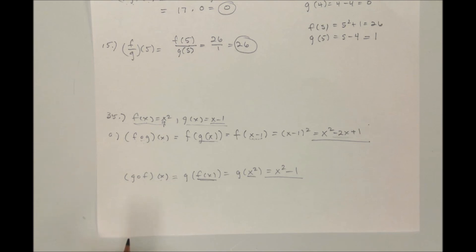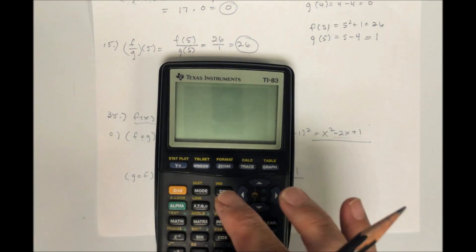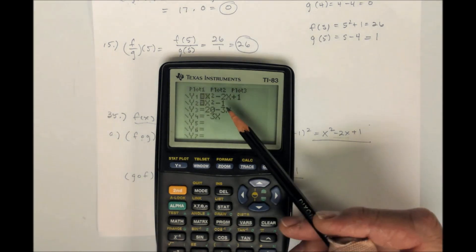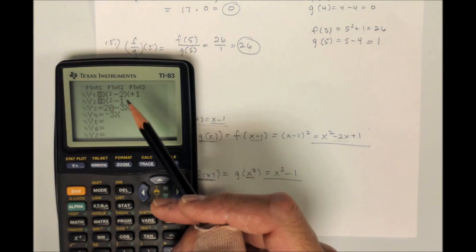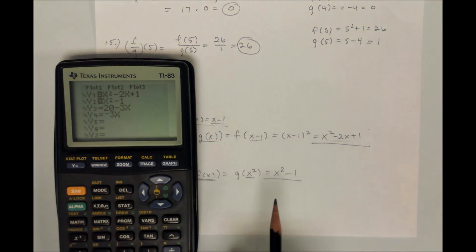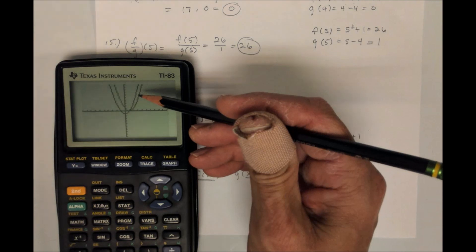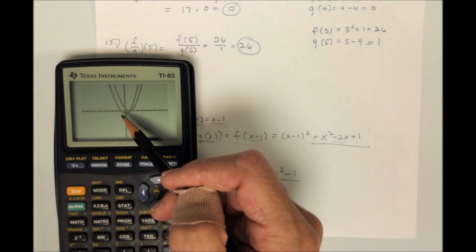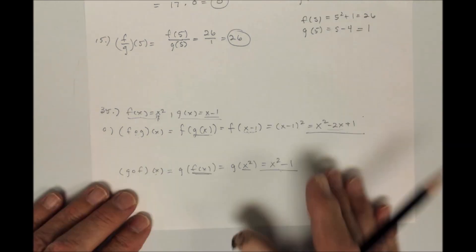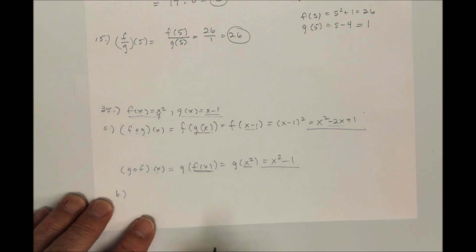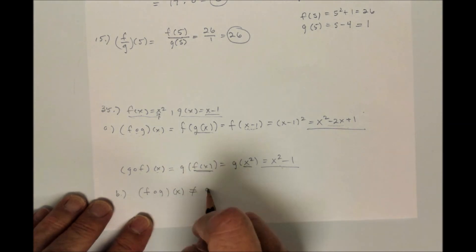Then they want you to look at these on a graphing calculator and graph them. I have four functions here, but I'm just looking at the top two that are highlighted: x squared minus 2x plus 1, and x squared minus 1. When graphed, you see two parabolas that are similar looking but different. In part B, you would say f circle g of x does not equal g circle f of x.